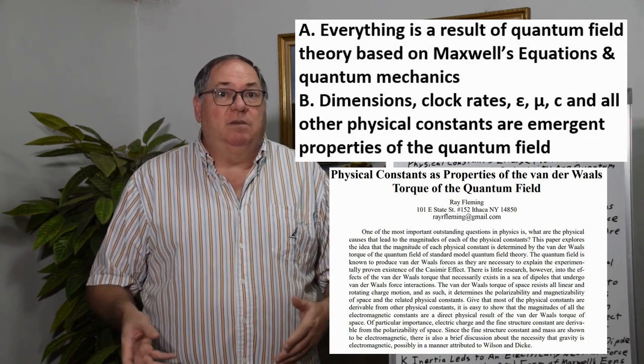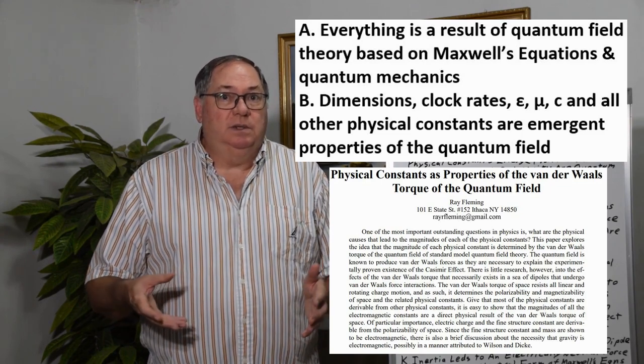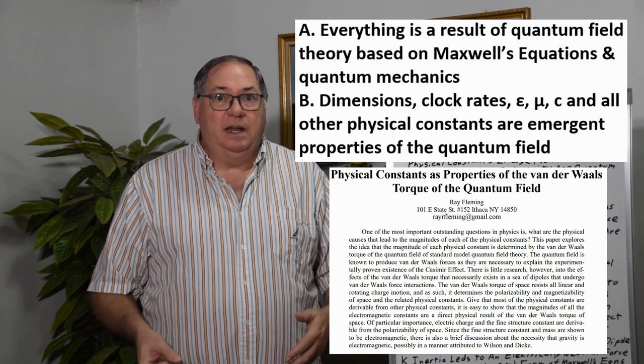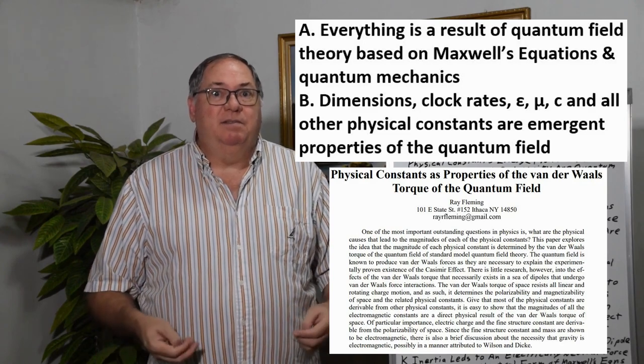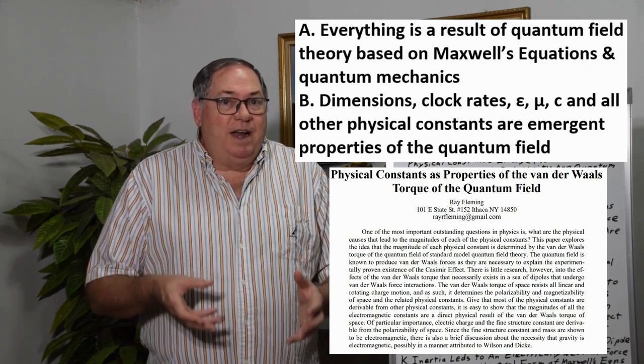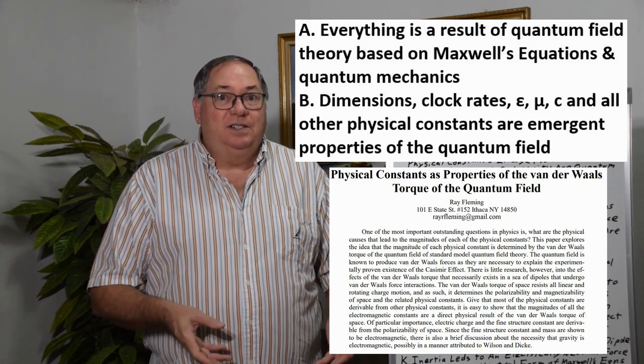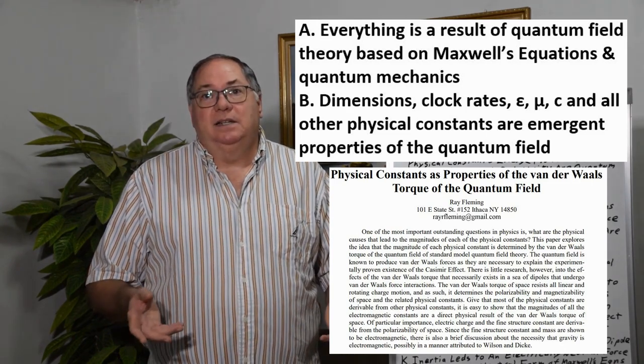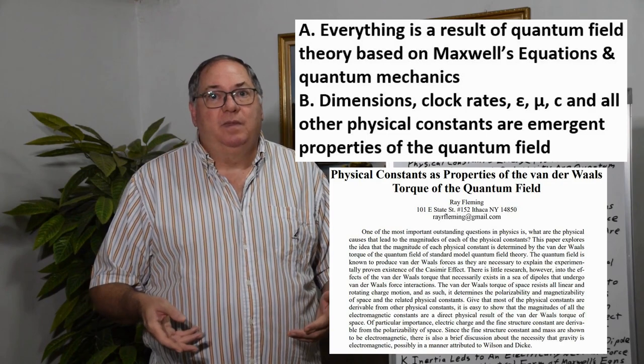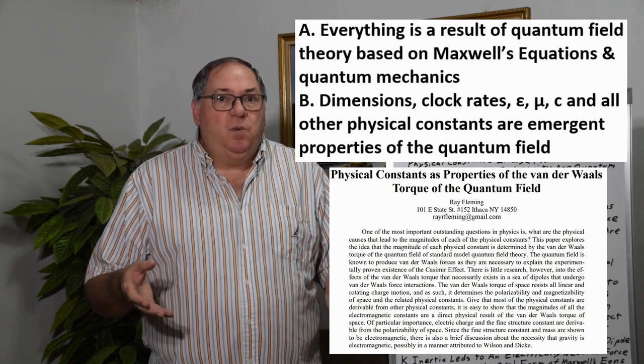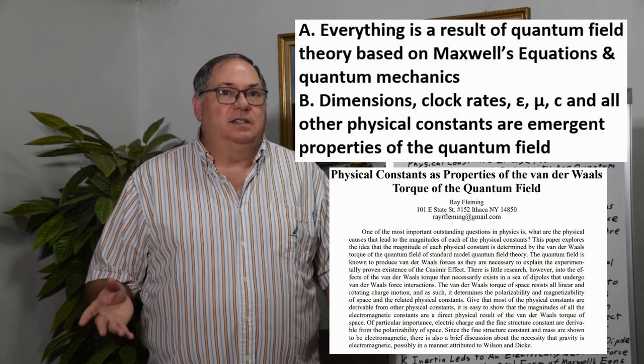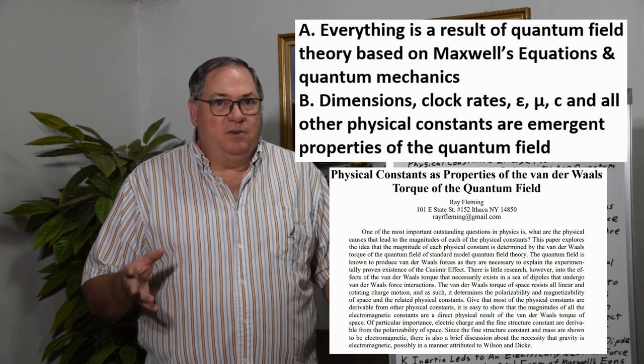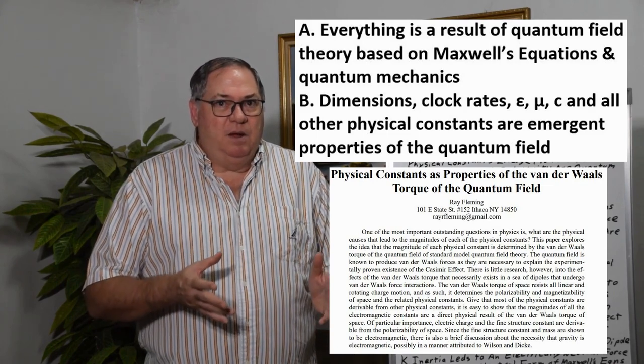All the physical constants come from the quantum field because the torque determines the resistance to polarization and magnetization, which gives us permittivity and permeability. Permittivity and permeability give us the speed of light. The rate of polarization gives us the electric charge and the fine structure constant. Planck's constant is the energy coefficient. So once you have all those, you have every other constant in physics. It's important to understand that there are no magical constants anywhere. They all come from the quantum field, as does everything else.